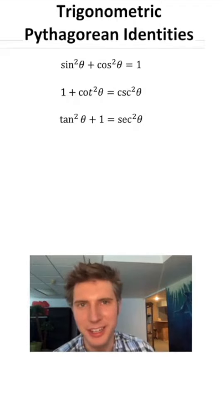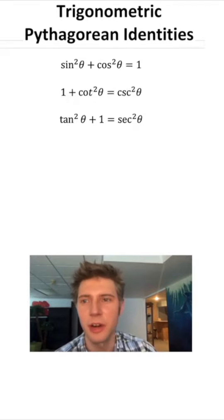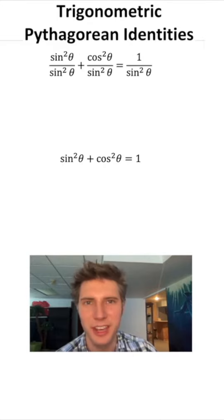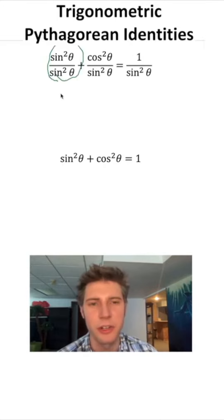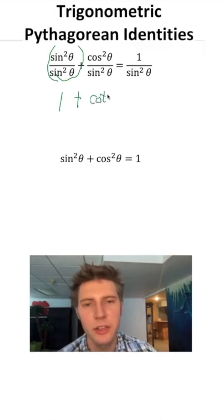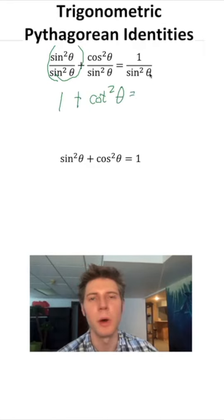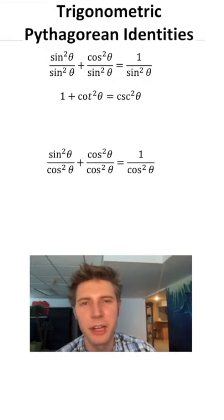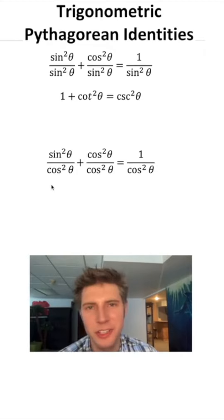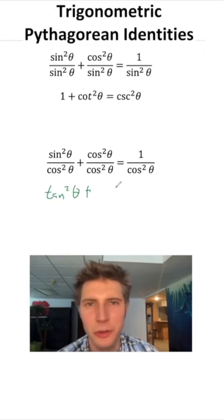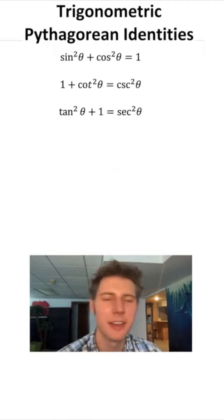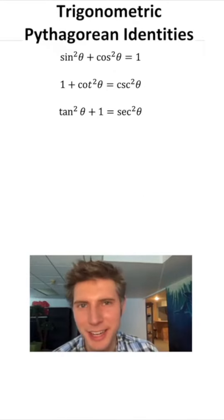What about the other Pythagorean trig identities? Starting from sine squared plus cosine squared equals 1, if we divide everything by sine squared: sine squared over sine squared is 1, cosine squared over sine squared is cotangent squared, and 1 over sine squared is cosecant squared — giving us 1 plus cotangent squared equals cosecant squared. To get the other one, divide everything by cosine squared: sine squared over cosine squared is tangent squared, cosine squared over cosine squared is 1, and 1 over cosine squared is secant squared — giving us tangent squared plus 1 equals secant squared. That's how to derive all the Pythagorean trig identities.